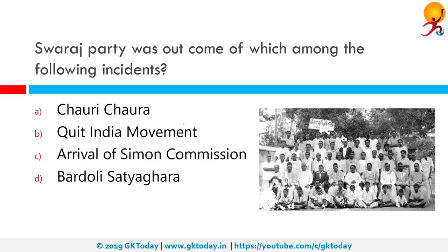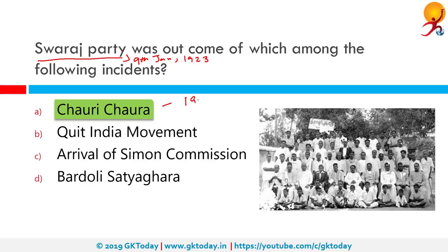Swaraj Party was the outcome of which among the following incidents? The correct answer is Chauri Chaura. It was formed on 9th January 1923 as a result of the Chauri Chaura incident, which happened on 5th February 1922, where a bunch of police officers were attacked and killed by a mob. In response, Gandhiji abolished the civil disobedience movement. Not many agreed — not even the National Congress — but people followed suit. The Swaraj Party was formed as a protest to Gandhiji's decision.